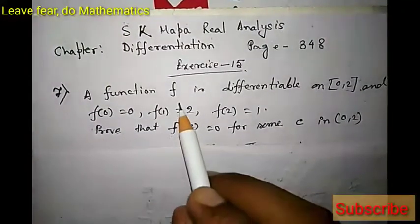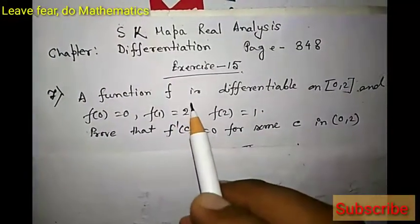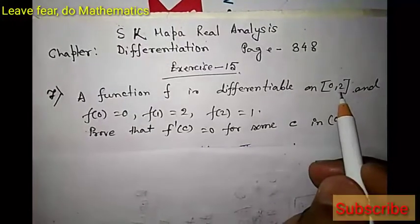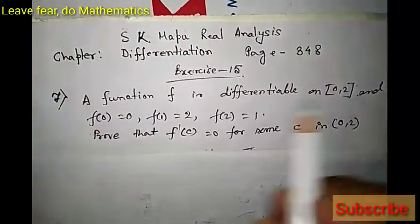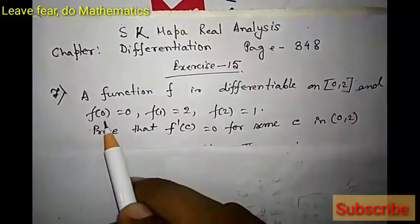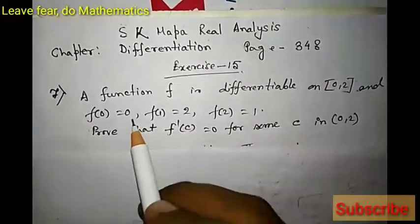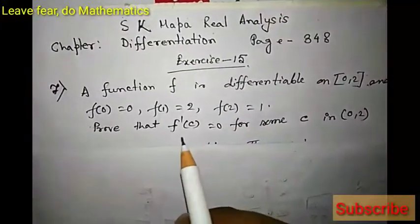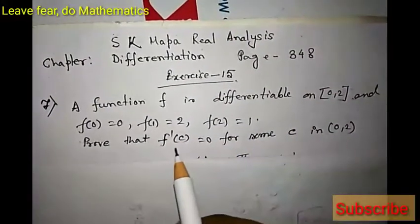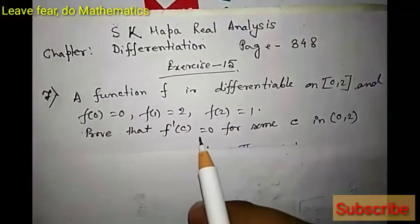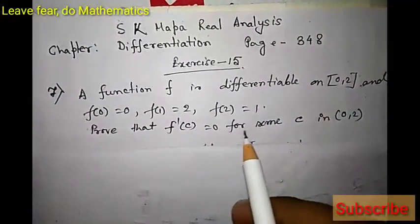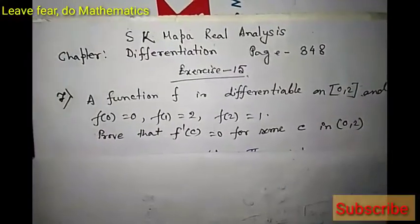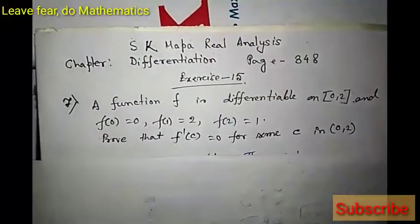The problem is: a function f is differentiable on the closed interval [0,2], and f(0)=0, f(1)=2, and f(2)=1. Prove that f'(c)=0 for some c in the open interval (0,2).